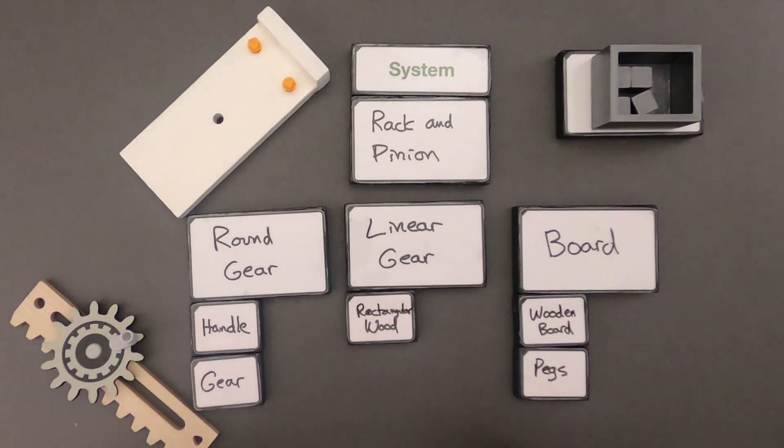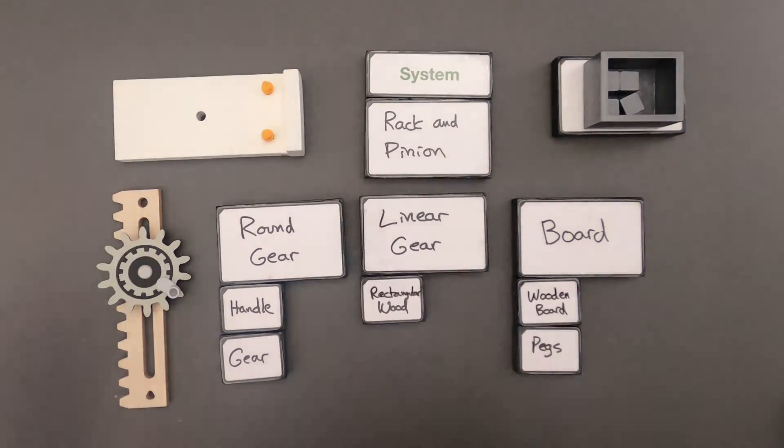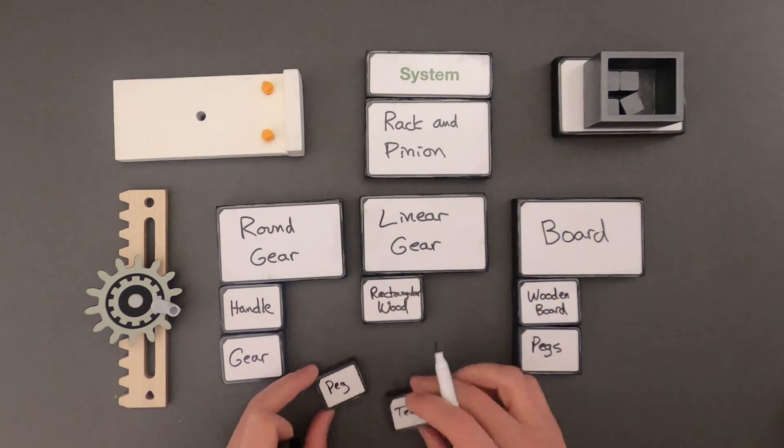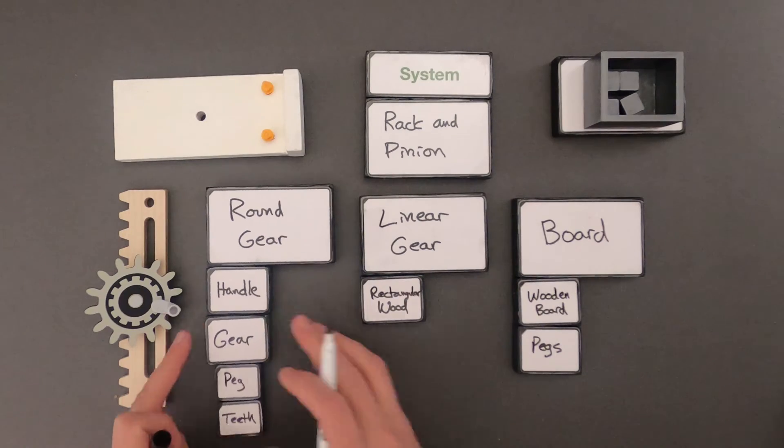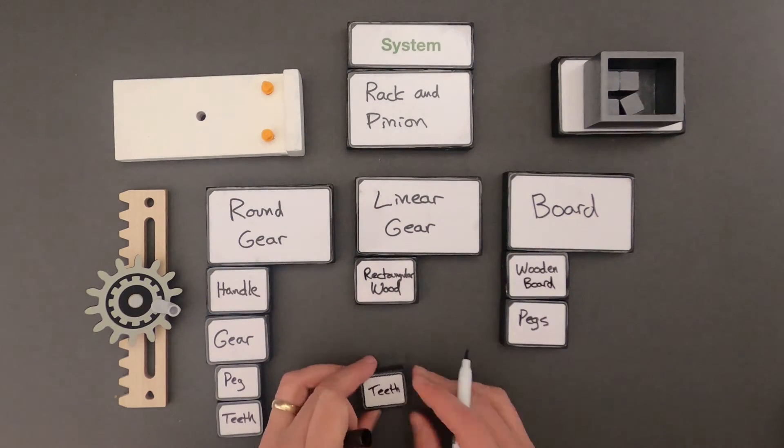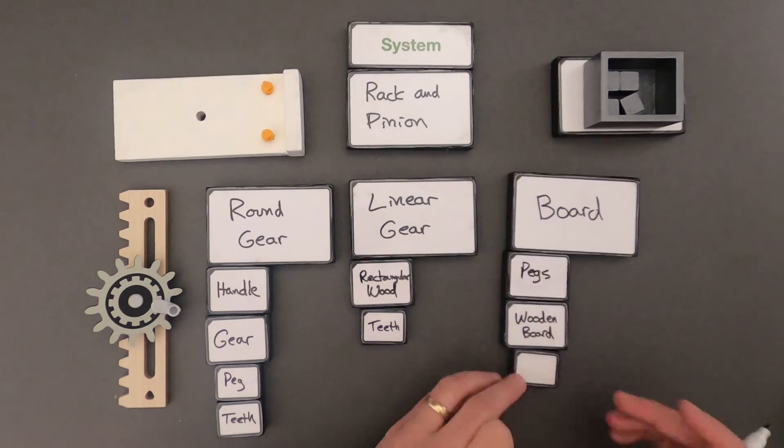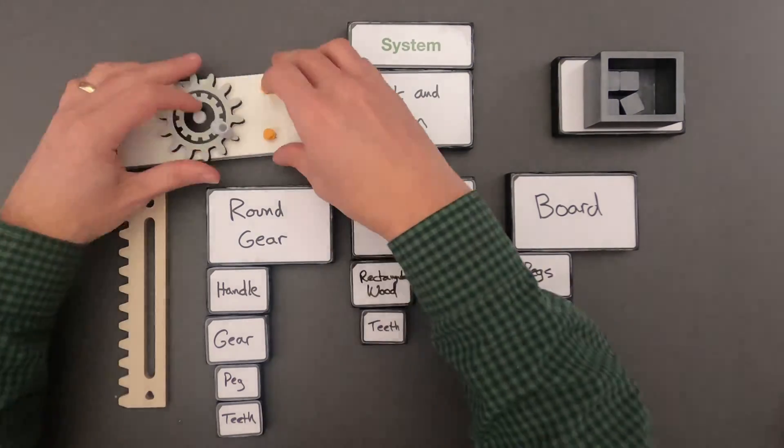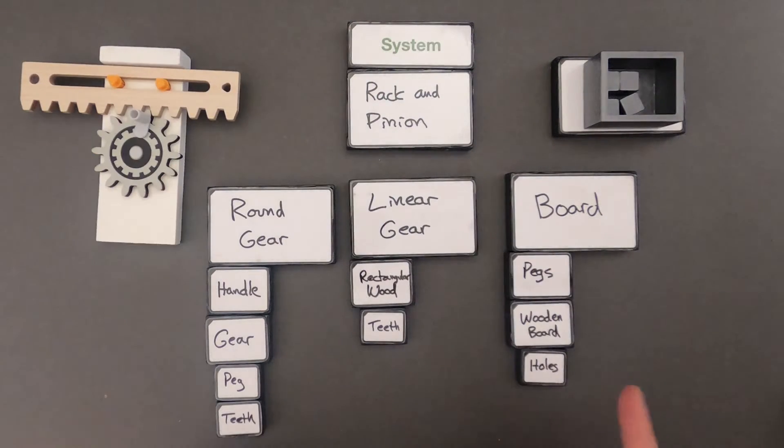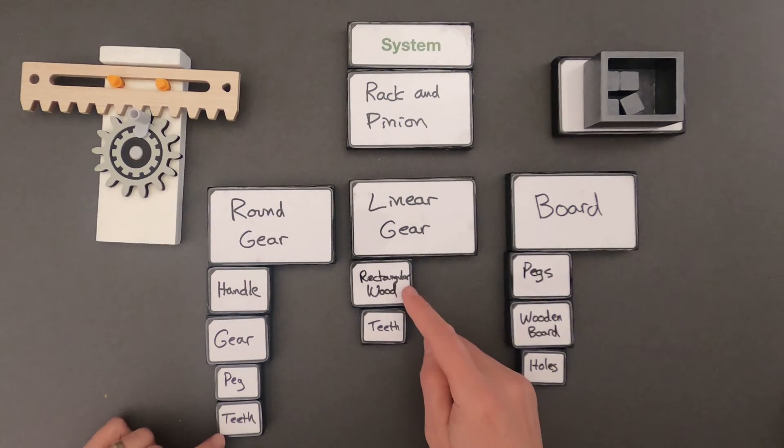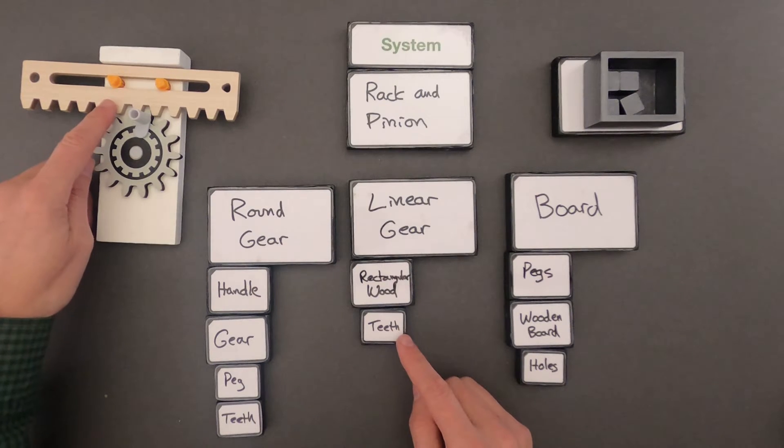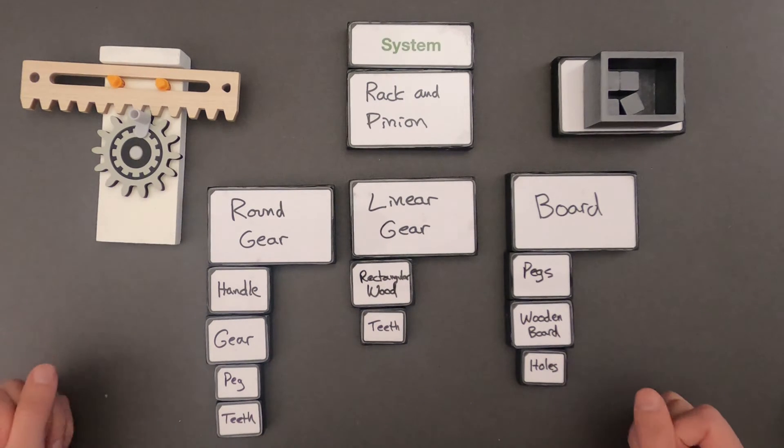What's the next step? Can I break any of these down into smaller systems? So I've broken the gear down to its two parts. The pegs and the teeth and the rectangular wood into its teeth. And then the wooden board into the holes that are there.